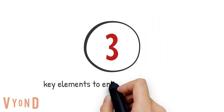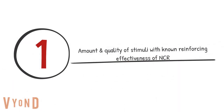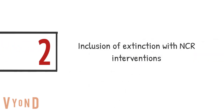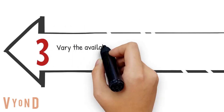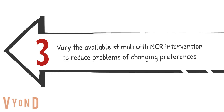There are three key elements to enhance the effectiveness of NCR. First, the amount and quality of stimuli with known reinforcing properties influence the effectiveness of NCR — knowing that maintaining reinforcer and delivering it with quality. Second, most treatments include extinction with NCR interventions, so the maladaptive behavior must be placed on extinction. Third, reinforcer preferences can change during the intervention, so it's recommended to periodically use a variety of available stimuli to reduce problems of changing preferences.